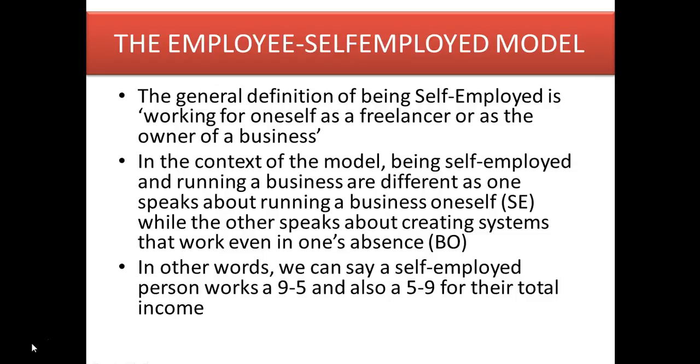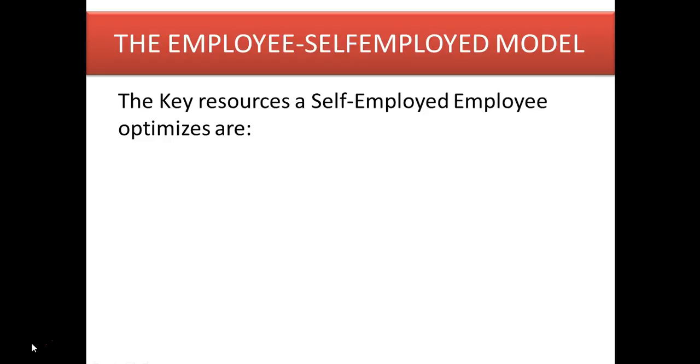These are the key resources that an employee self-employed optimizes — these are the keys to balance. The first one is time. We said the nine to five, and there's also what we call the five to nine. Most people I know close at a particular time — five, six, sometimes eight o'clock — and that's the end. Their primary desire at that point is to rest and recover from work. Rest is important, but all they do productively is between the nine-to-five hours.